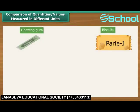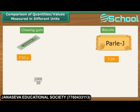Hari has bought a chewing gum for 50 paise. His friend Shiv has bought a packet of biscuits for Rs. 20. Who spent more money and by how many times? Before comparing, we express Rs. 20 as 2000 paise. Now we can work out the ratio. 2000 by 50 is 40 by 1, which is equal to 40 is to 1. We can therefore say that Shiv has spent 40 times more money than Hari.